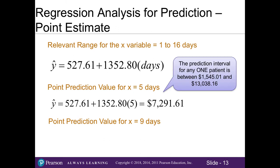If we were to create the prediction interval using XLstat for one patient, our interval would be somewhere between $1,545.01 and $13,038.16. We can see that our prediction interval here is very wide and it's not really useful. And so that's why we want to be careful when applying prediction intervals for a particular value or instance. And same thing, if the hospital wanted to know the average cost for a stay of 9 days, we would take our formula and plug in 9 where our x is and that would give us $12,702.81.